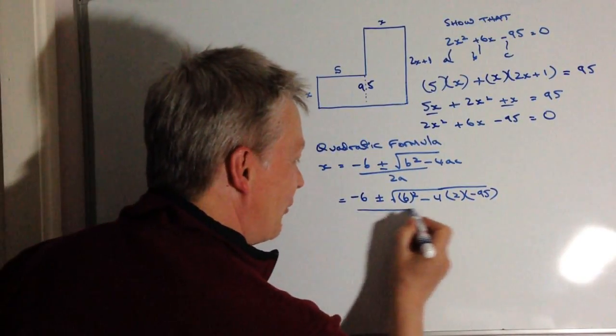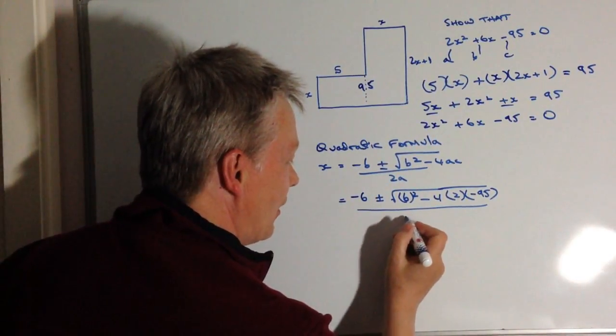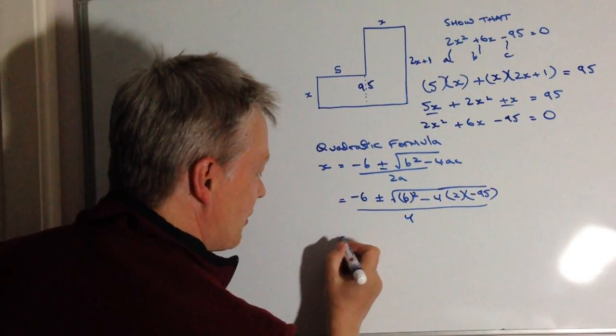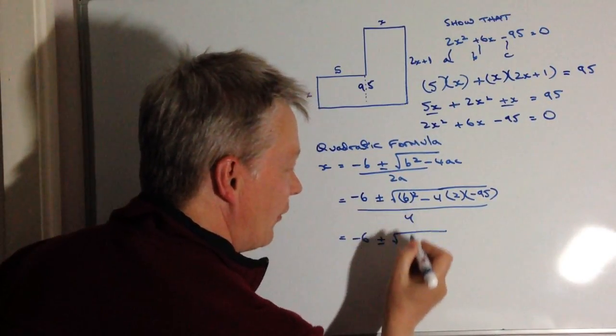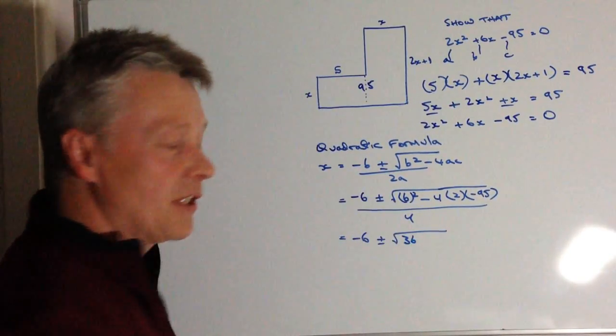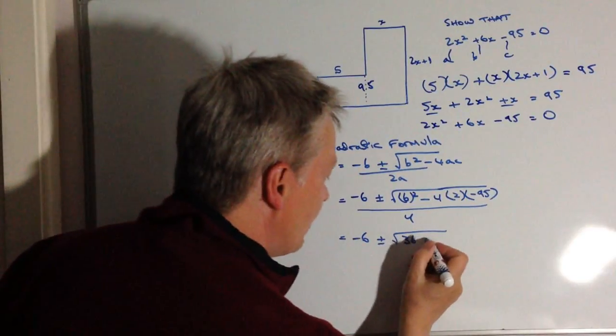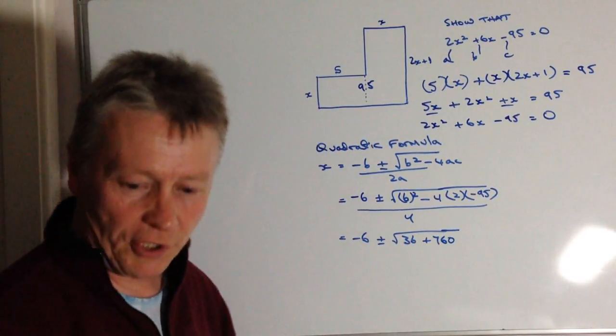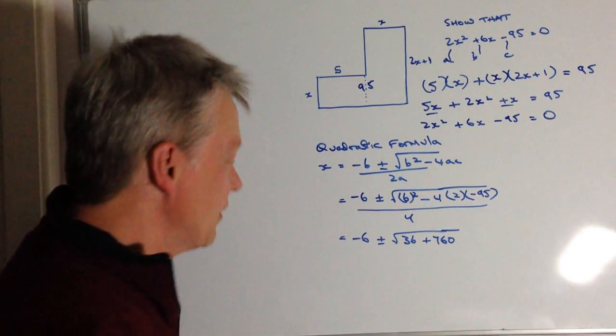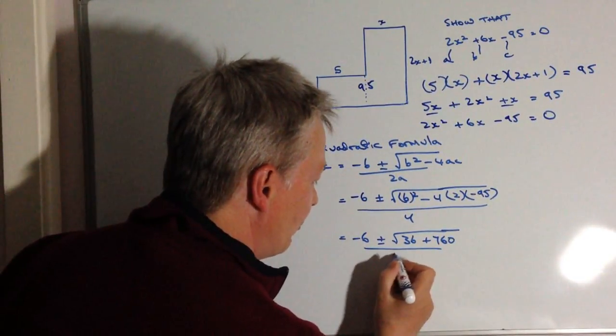And then I'm going to divide all of that by 2 times A, which is going to be 4. So as I mentioned before, I've got minus 6 plus or minus the root of 36, which is 6 squared, plus 760. Let me just check that. Yep, that's 760. And I'm going to divide that through by 4.